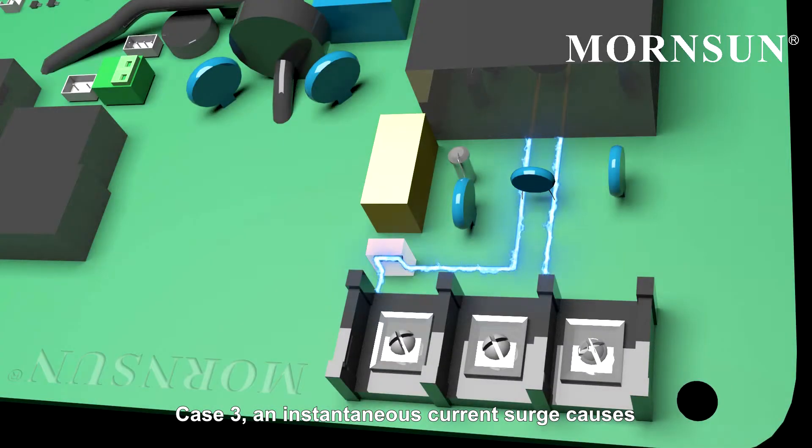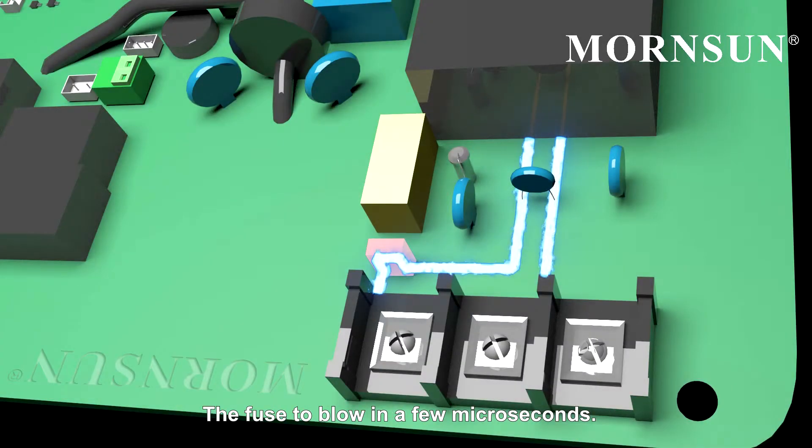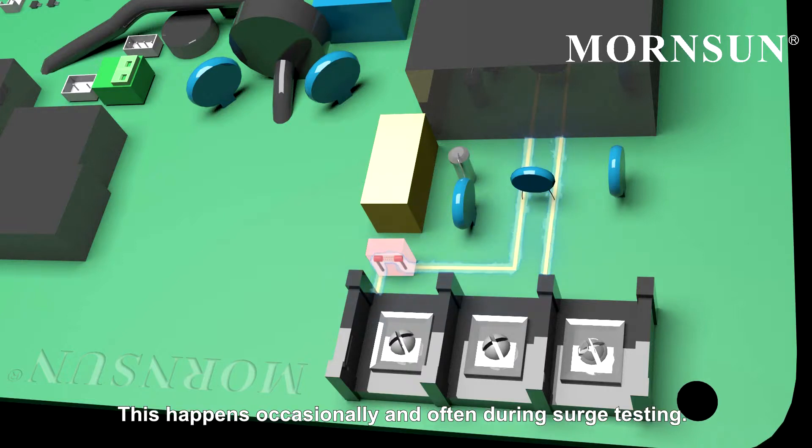Case 3: An instantaneous current surge causes the fuse to blow in a few microseconds. This happens occasionally and often during search testing.